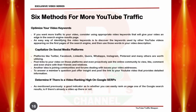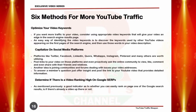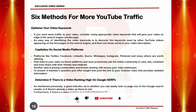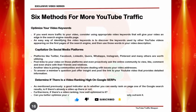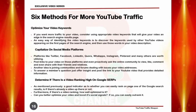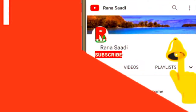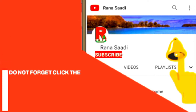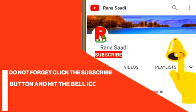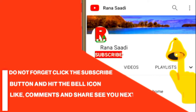Tip six: determine if there is a video ranking high on Google SERPs. As mentioned previously, a good indicator as to whether you can easily rank on page one of the Google search results is if there's already a video up there or not. Furthermore, if there is a video ranking, assess how well optimized it is. Can you better optimize your video and boost its social signals? If so, you can easily outrank it.